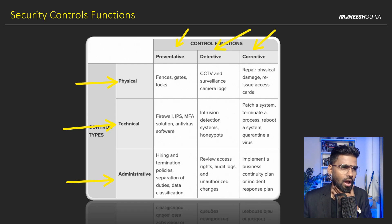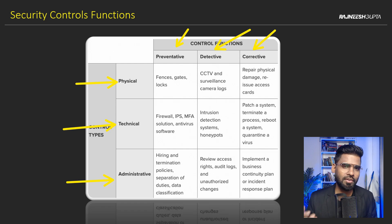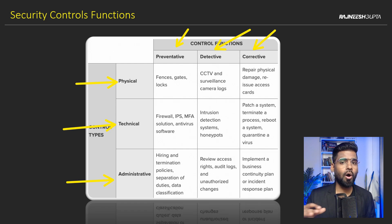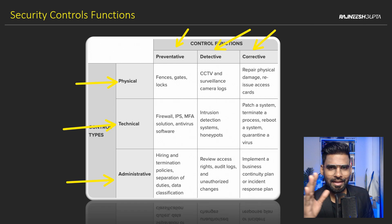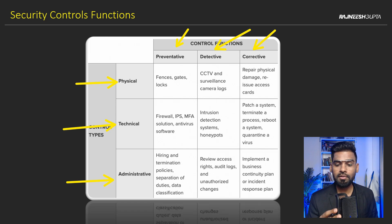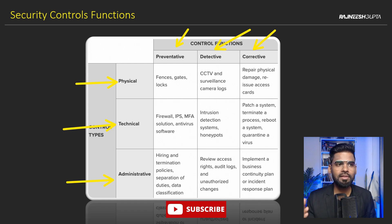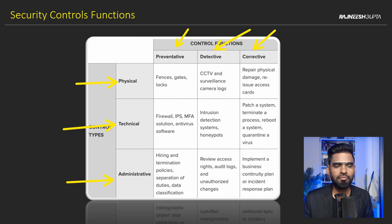With preventive control, we are preventing threats from occurring in the first place. This is not possible for all kinds of threats — you can't prevent a DDoS attack from happening entirely. What you can do is apply a solution that takes care of most threats, but you can't neutralize the entire threat using preventive controls. For physical controls, preventive examples would be fences, gates, and locks.